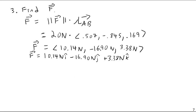I can also express this using i, j, k notation as 10.14i minus 16.90j plus 3.38k Newtons. The angled bracket notation is just the same as writing i, j, k — a little more concise and less messy.